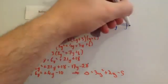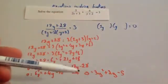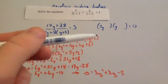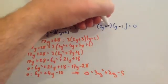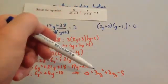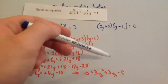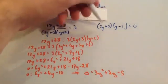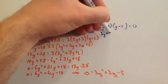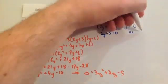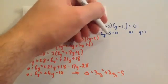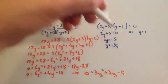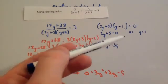Factorising 3y squared plus 2y minus 5: we put 3y and y at the front of both brackets. Trying minus 1 and plus 5: 3y times y is 3y squared, 3y times minus 1 is minus 3y, plus 5y gives 2y — that works. So the factors are (3y plus 5)(y minus 1) equals 0. That means either 3y plus 5 equals 0 or y minus 1 equals 0. From the second: y equals 1. From the first: 3y equals minus 5, so y equals minus 5 over 3. The two solutions are y equals minus 5 over 3, or y equals 1.